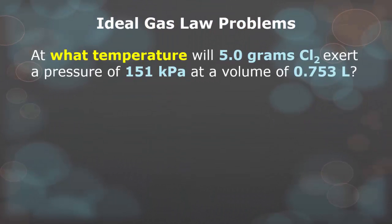At what temperature will 5 grams of Cl gas exert a pressure of 151 kilopascals at a volume of 0.753 liters? Notice that you have grams, which you have to convert to moles, and you also have kilopascals, which we have to convert to atmospheres. And remember, your temperature will be in Kelvin.